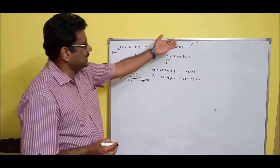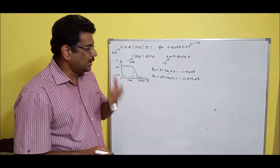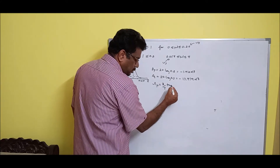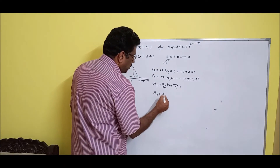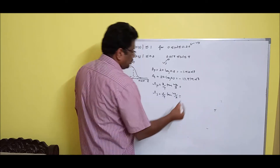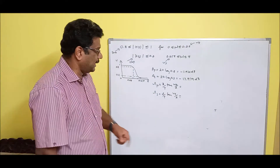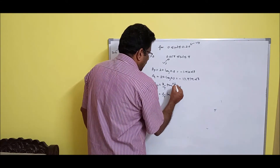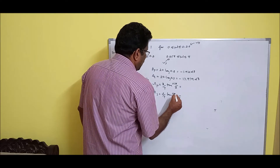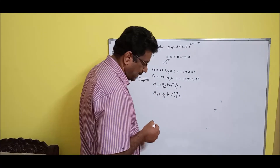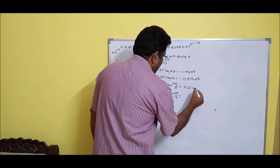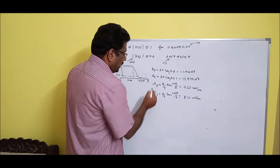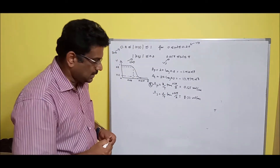Second issue: the specifications give digital frequency (in radians), but for analog design we need analog frequencies. Use the pre-warping formula: Ωp = (2/T) × tan(ωp/2) and Ωs = (2/T) × tan(ωs/2), with T = 1. Substituting ωp = 0.2π and ωs = 0.85π gives Ωp = 0.65 rad/s and Ωs = 8.33 rad/s. Remember Ωp = 0.65 — you'll need it later.